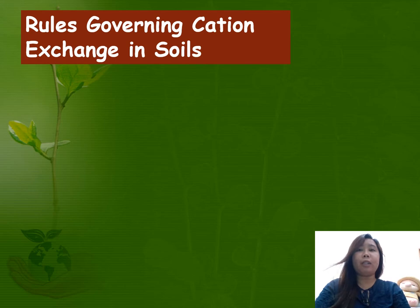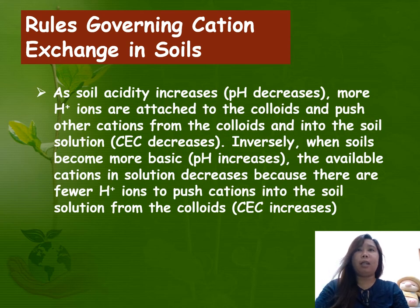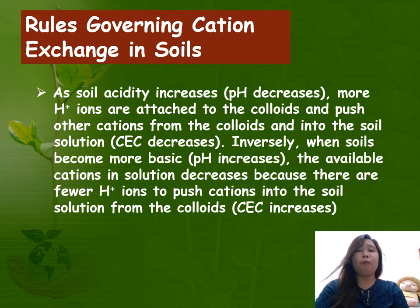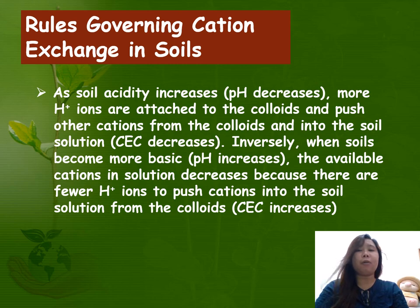Soil pH also plays a role in the cation exchange process. As soil acidity increases (pH decreases), more hydrogen ions are attached to the colloids and push other cations from the colloids into the soil solution. Inversely, when soils become more basic (pH increases), the available cations in solution decrease because there are fewer hydrogen ions to push cations into the soil solution from the colloids. Therefore, CEC changes accordingly.